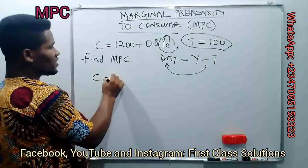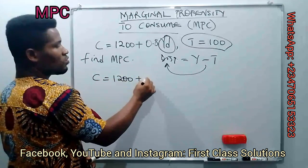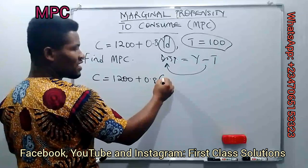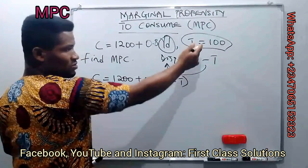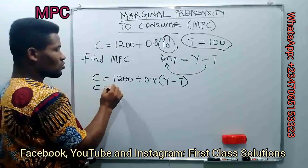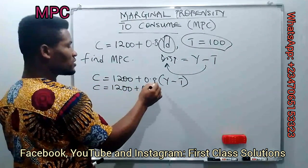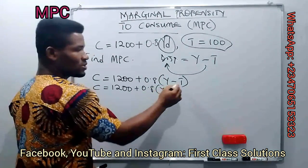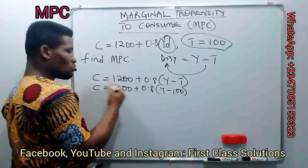Our consumption function gives us C = 1200 + 0.8Yd. Remember we have our Yd to be Y minus T, so we simply substitute Y minus T, and remember our T was given as 100. So we have C = 1200 + 0.8(Y - 100).